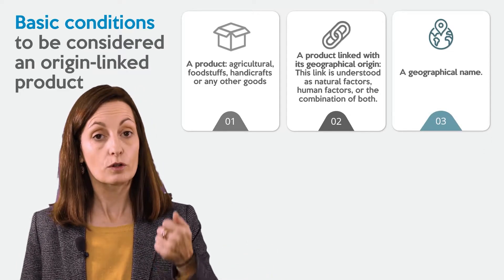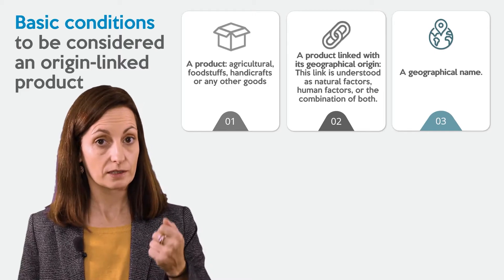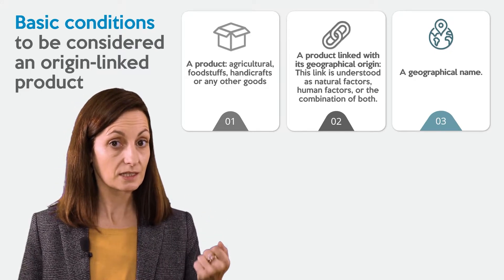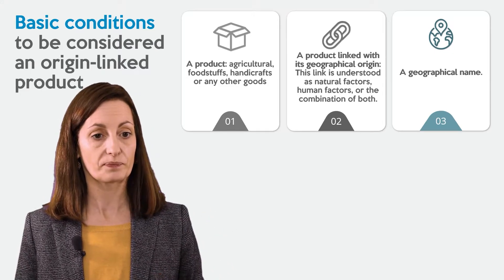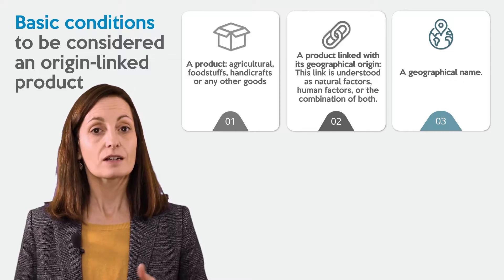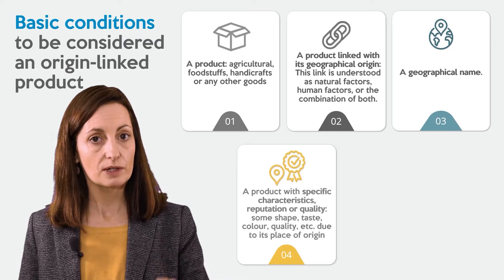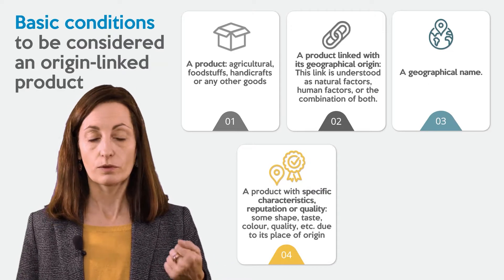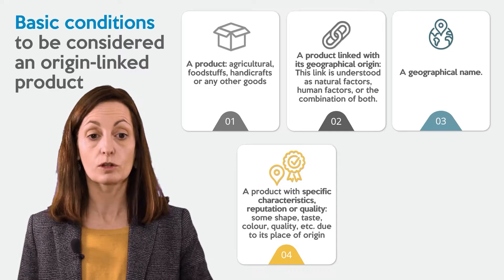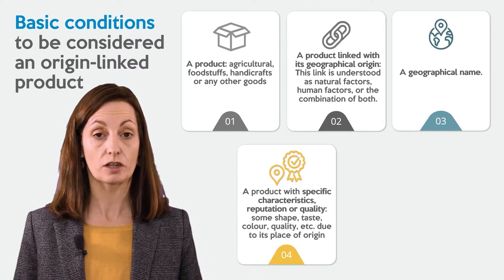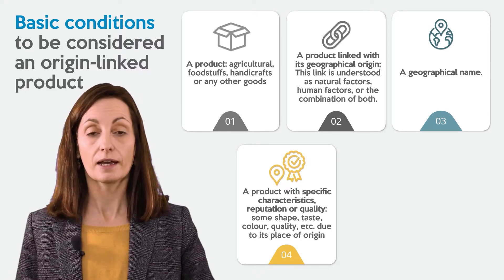We also need a geographical name that will identify the product with its geographical origin. We also need a product with specific characteristics, reputation, or quality — for instance, some shape, taste, colour, quality, etc.